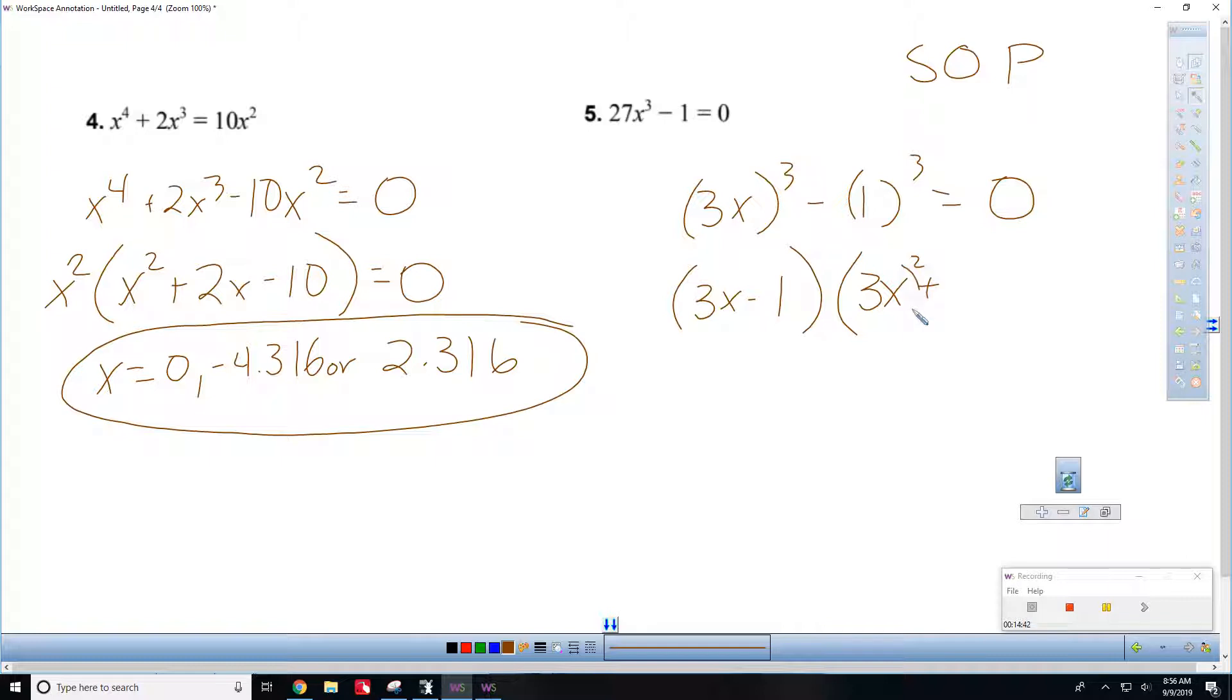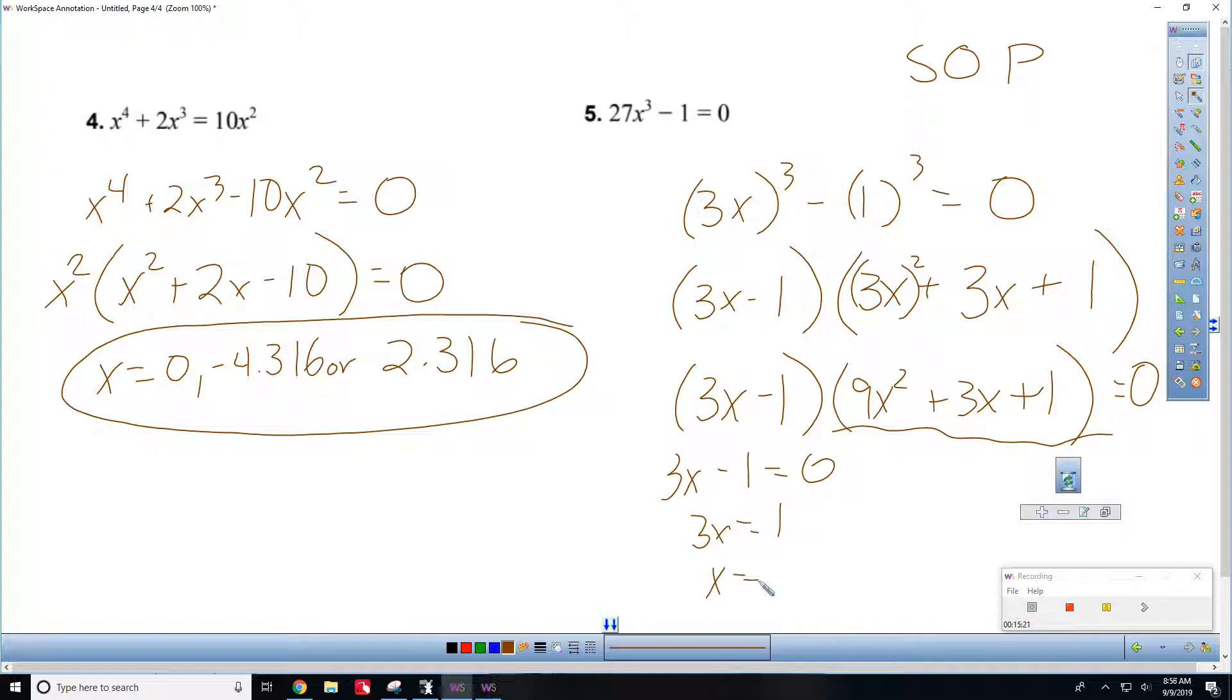9x. 3x. I'll do this. 9x squared plus 3x times 1, 3x plus 1. So, 3x minus 1 times 9x squared plus 3x plus 1. Okay. Equals 0. So, either 3x plus, sorry, 3x minus 1 equals 0. Or, this equals 0. So, this one you get 3x equals 1. x is 1 third. There's one of our answers.